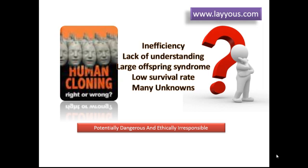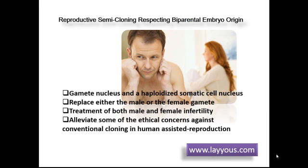Should humans be cloned? Due to the inefficiency of animal cloning — only about one or two viable offspring for every 100 experiments — and the lack of understanding about reproductive cloning, scientists believe it would be unethical to attempt human cloning. About 30% of clones born alive are affected by large offspring syndrome and other serious conditions. Most cloned animals have died early from infections and other complications, and human cloning will likely have the same problems. In addition, the impact of cloning on mental development is not known. Intellect and mood are crucial for human development, and many unknowns exist, so the attempt to clone humans is considered potentially dangerous and ethically irresponsible.